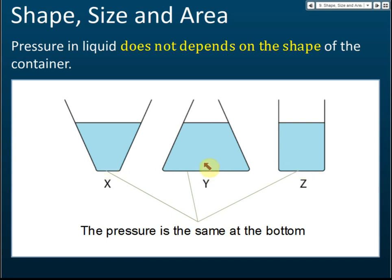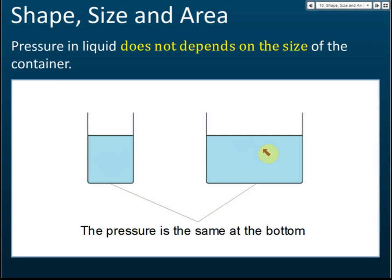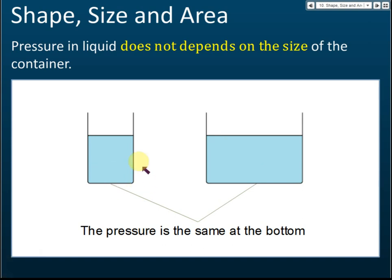Note that the pressure of the liquid at the bottom is different from the pressure exerted by the container on the table — those are not the same concept. Pressure in a liquid does not depend on the shape of the container. It also does not depend on the size of the container. Even if one container is much bigger than another, as long as the depth of the water is the same, the pressure at the bottom is the same.